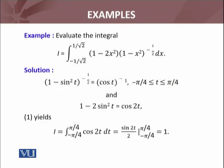I use some trigonometric identities to simplify: 1 minus sin squared t equals cos squared t, so that term becomes cos(t) raised to the power minus 1. And 1 minus 2 sin squared t equals cos(2t). I will substitute all these trigonometric formulas into my integral.